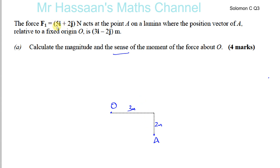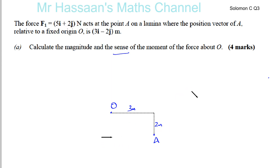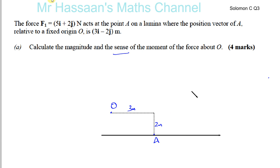The force 5i + 2j acts at point A. The 5i component means five Newtons to the right — I'll draw that through A making it quite long so we can use its distance. That's five Newtons this way. The +2j component means two Newtons straight up, also going through A. So that's two Newtons here.